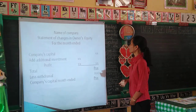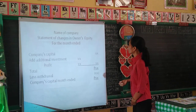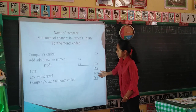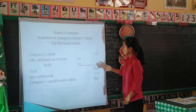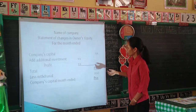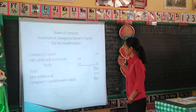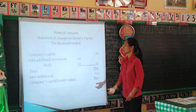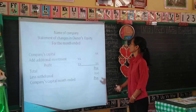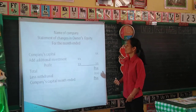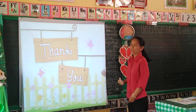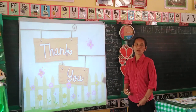Next is the statement of changes in owner's equity. You can see its format here, which includes profit and the company's capital for the month ended. Thank you.